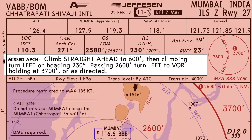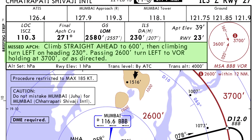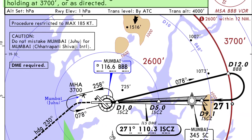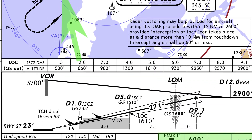The next row shows the standard missed approach procedure. If a pilot is unable to land after making an approach, they should follow this procedure: climb straight ahead to 600 feet, turn left heading 230 and continue climbing. When passing 2,600 feet, turn left to the VOR to join the holding at 3,700 feet, or as directed by ATC. Any Jepson approach plate always mentions the missed approach procedure in three different places — in plain text, drawn for easy interpretation, and in shorthand for quick and easy reference.